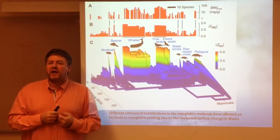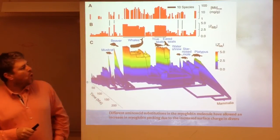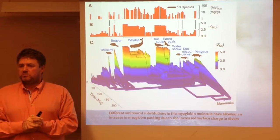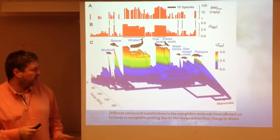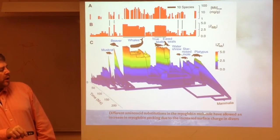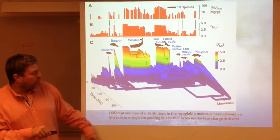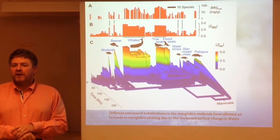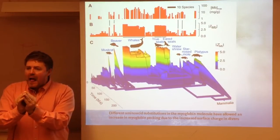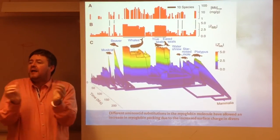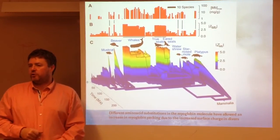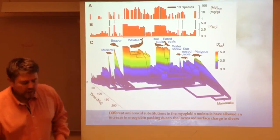The authors can study this rather simply, because what determines the net surface charge of myoglobin is the primary structure of the molecule — and that can be sequenced, and has been sequenced for many species. What the authors are saying is that different amino acid substitutions in the myoglobin molecule have allowed an increase in myoglobin packing due to the increased surface charge in divers. A change in the surface charge, achieved through amino acid substitutions, allows more myoglobin to be packed into the muscle.